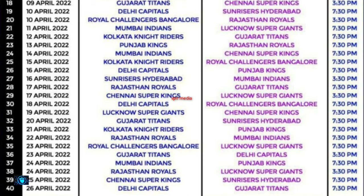April 17th: Rajasthan Royals vs Gujarat Titans. April 17th another match: Chennai Super Kings vs Lucknow Super Giants. April 18th: Delhi Capitals vs Rajasthan Royals vs Royal Challengers Bengaluru. April 19th: Lucknow Super Giants vs Chennai Super Kings. April 20th.